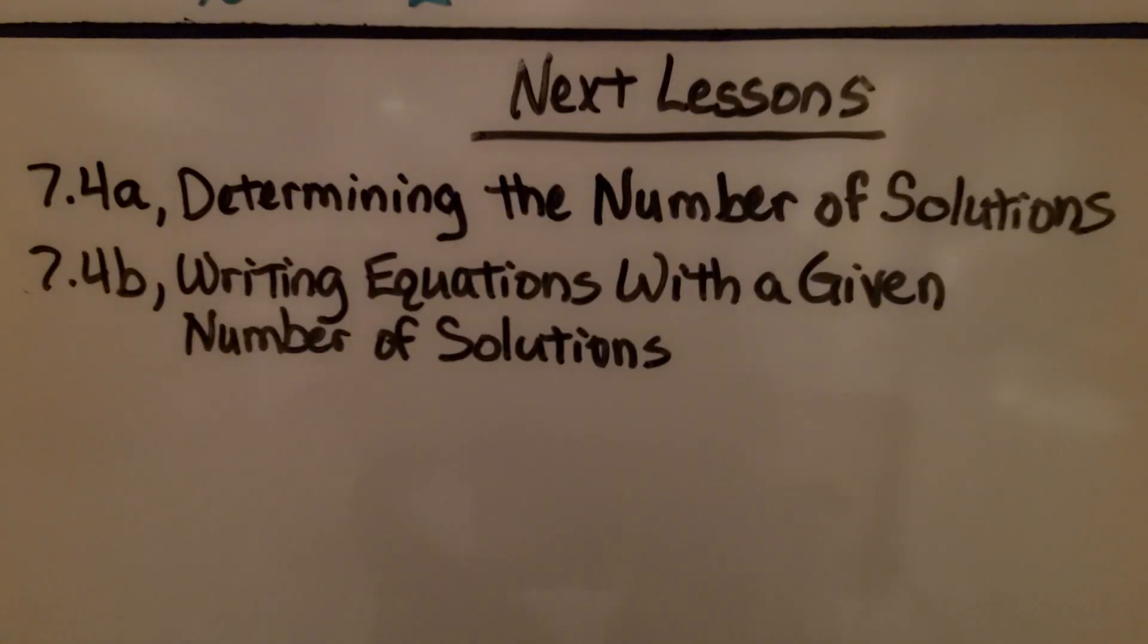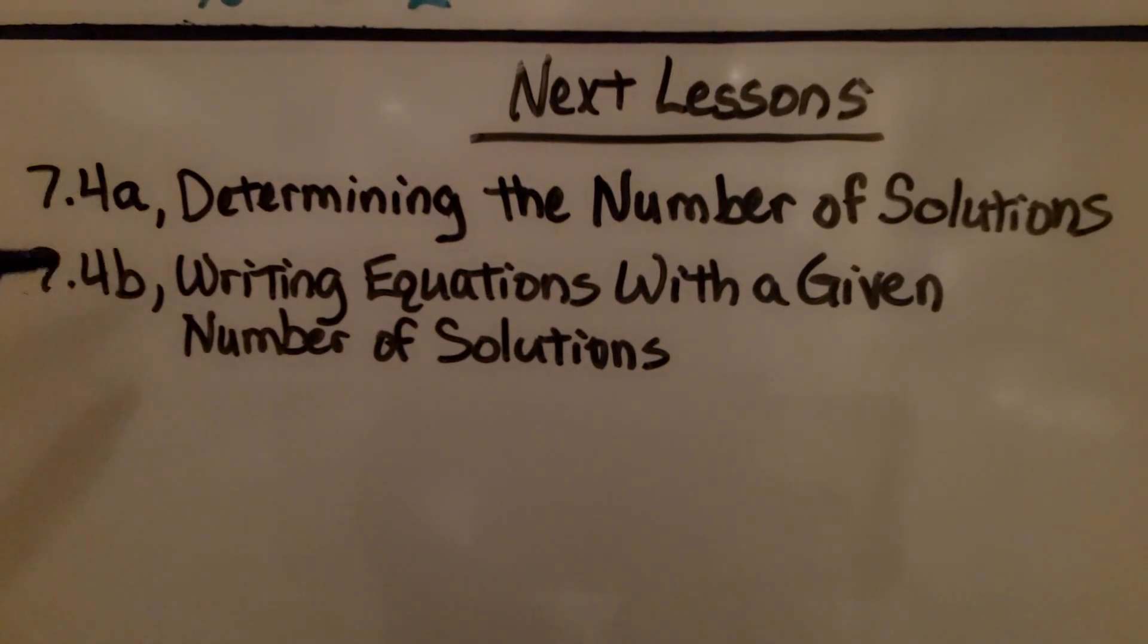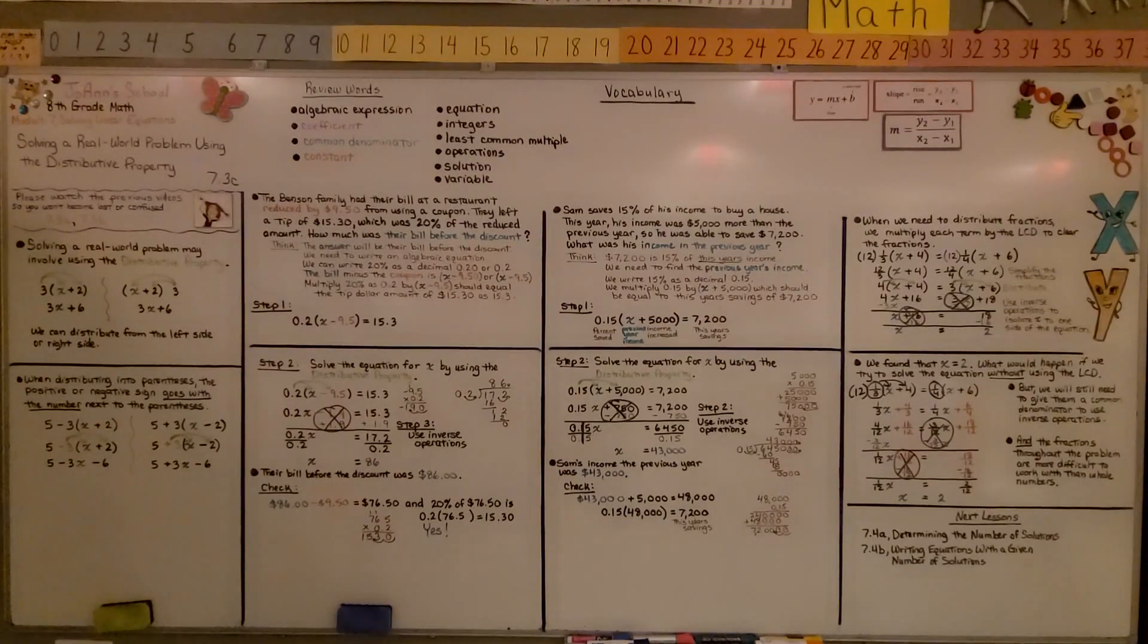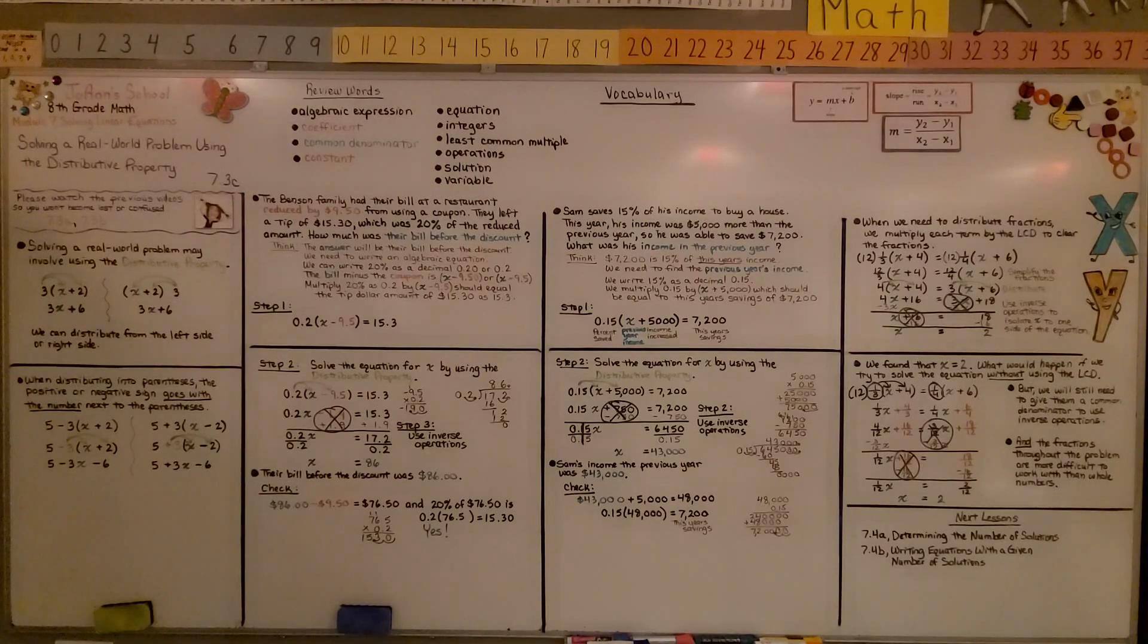We're finished with lesson 7.3. We're moving on to 7.4 which is in two parts. 7.4a is determining the number of solutions. That would be the number of solutions to an equation. When we're dealing with variables, an equation might have one solution. It might have several solutions. I hope you have a wonderful day and join me for the next lesson.